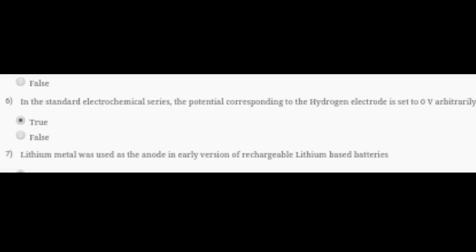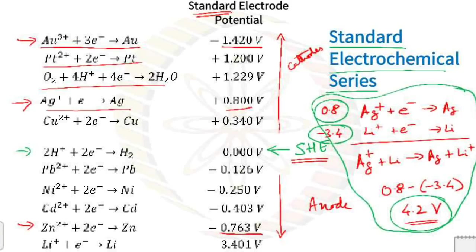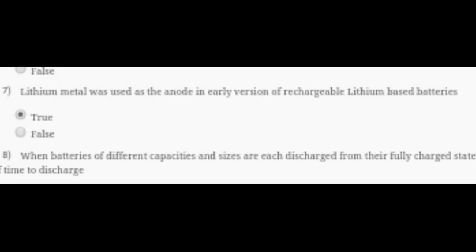Question 6: In the standard electrochemical series, the potential corresponding to hydrogen electrode is set to zero volts arbitrarily. This is True. You can see from the proof in this picture - in the middle there's written SHE, that is Standard Hydrogen Electrode, and the voltage is zero. So the answer is True.